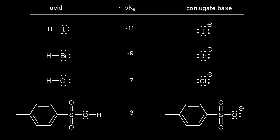The SN1 and SN2 reactions involve leaving groups. So let's look at this pKa table to study leaving groups in more detail.